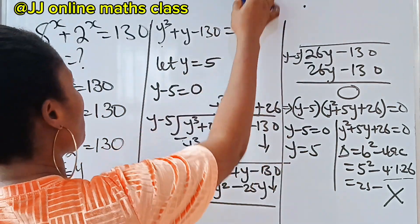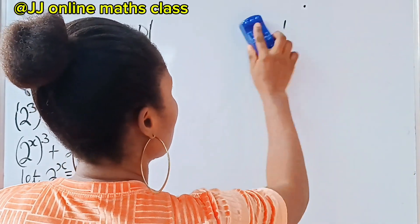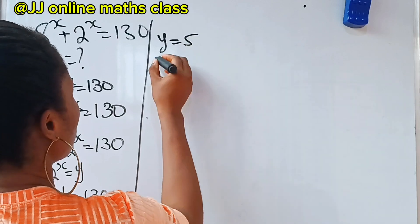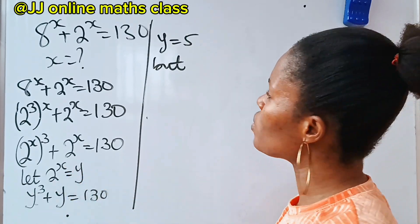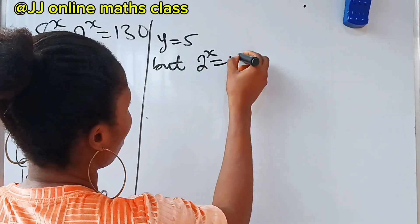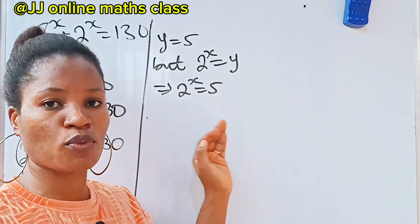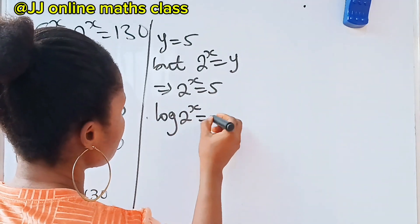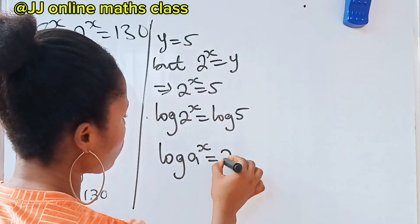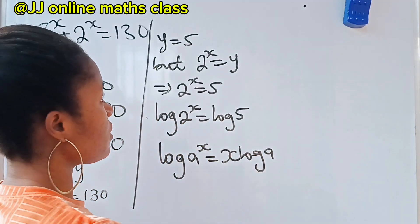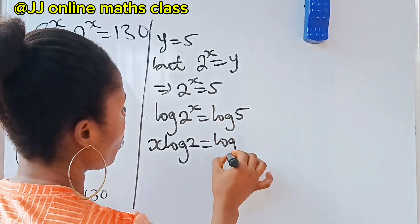Having y = 5, and recalling that 2 to the power of x equals y, we have 2 to the power of x equals 5. At this point we introduce log to both sides: log(2 to the power of x) equals log 5. Using the power rule — log a raised to x equals x times log a — we bring down the x to get x log 2 equals log 5.